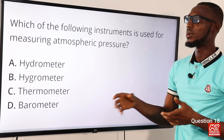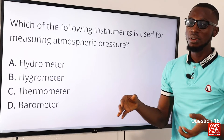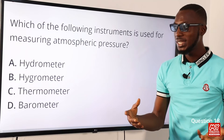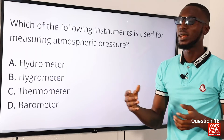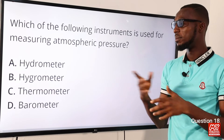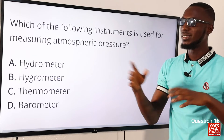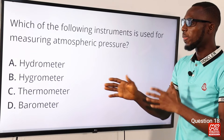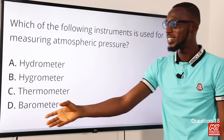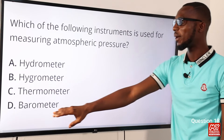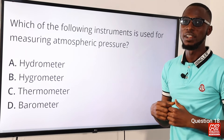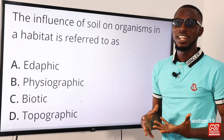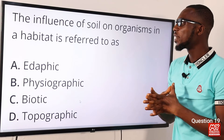Question eighteen: which instrument is used for measuring atmospheric pressure? A barometer measures atmospheric pressure. A thermometer measures temperature. A hygrometer measures relative humidity. A hydrometer measures density or specific gravity. So the correct option is option D for barometer.